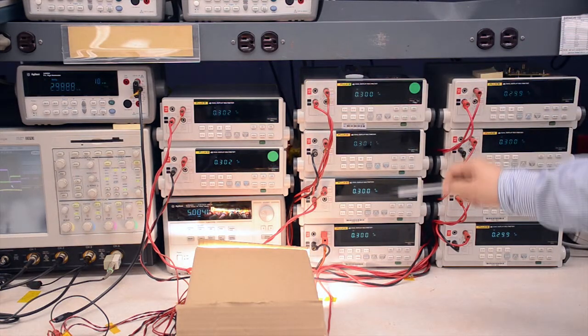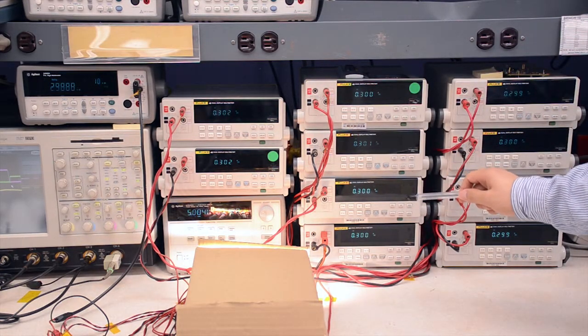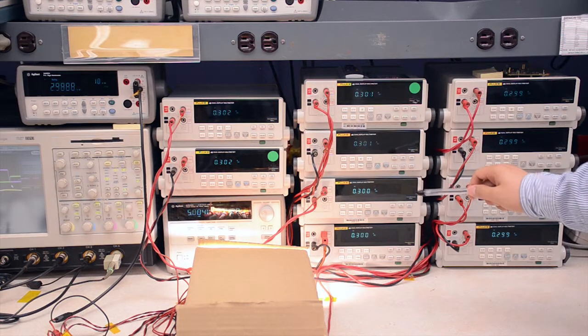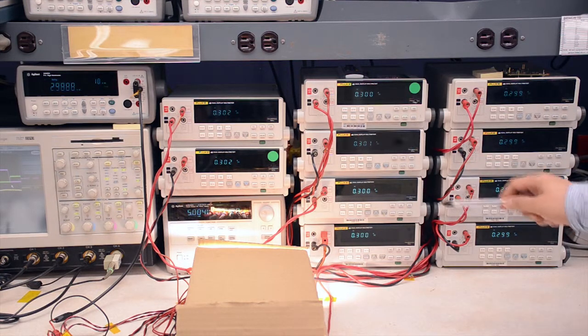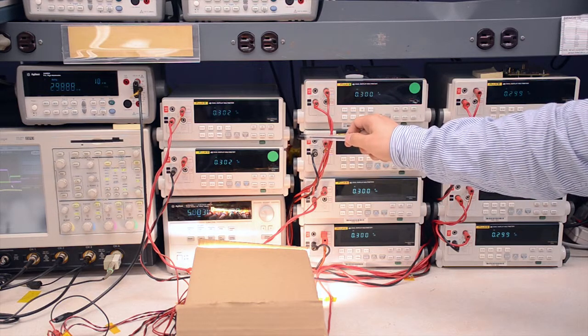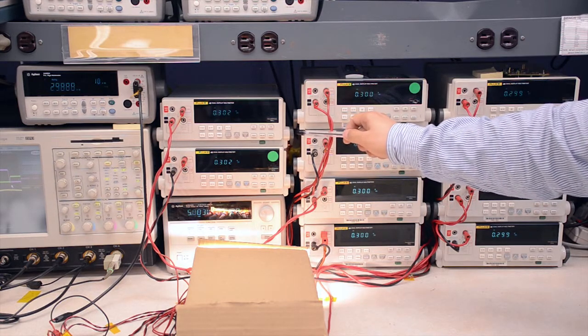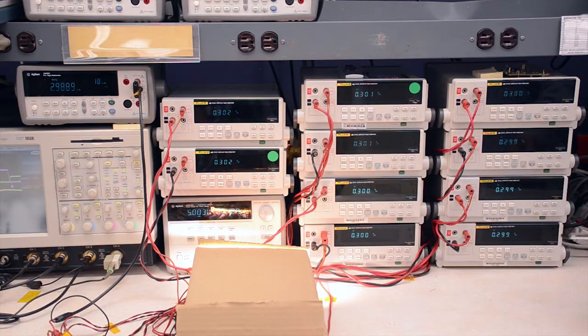The following 10 multimeters display the forward current of 10 LED strings. The maximum current is 302 milliamperes. The minimum current is 299 milliamperes. The current variation is about 3 milliamperes.